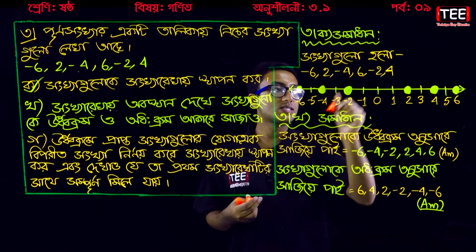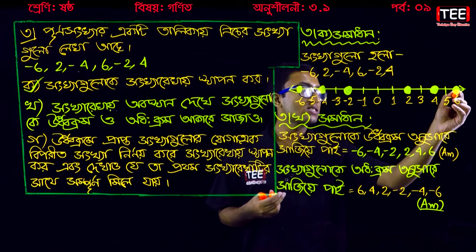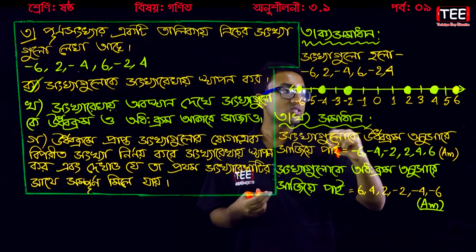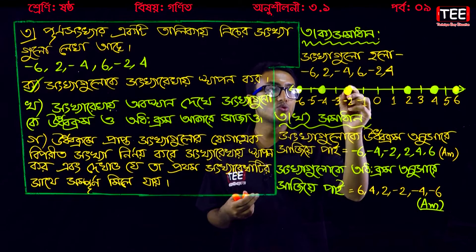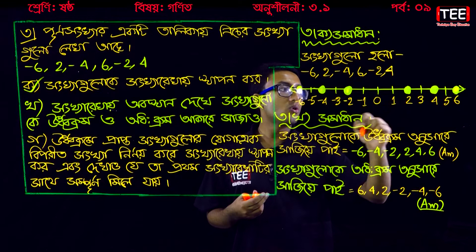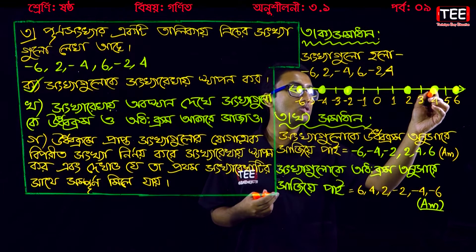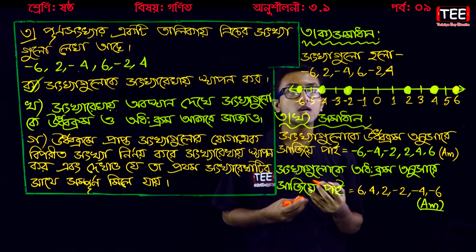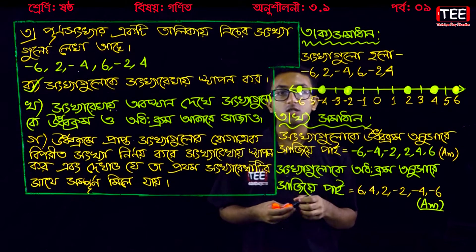Now we will write minus 6, that means minus 6, minus 2, minus 2, and then we will write minus 4, and then we will write minus 4.